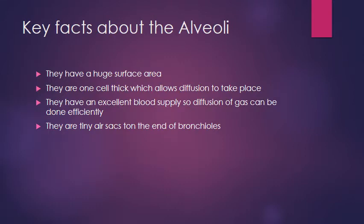Key facts about alveoli — how and why they allow diffusion to happen. They have a large surface area with thousands covered in capillaries, allowing lots of diffusion of oxygen and carbon dioxide. They are one cell thick, which allows diffusion to take place. Similarly, capillaries are also one cell thick and allow diffusion to occur. Alveoli have an excellent blood supply so lots of gases can be diffused, and they are the tiny air sacs at the end of the bronchioles.